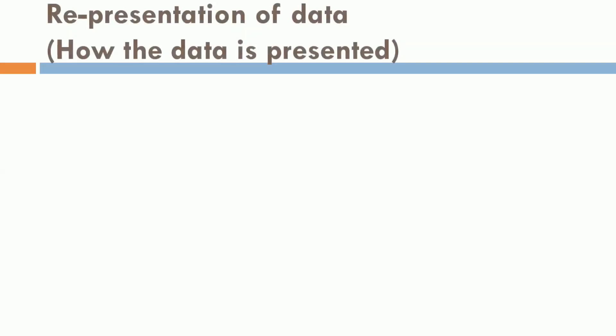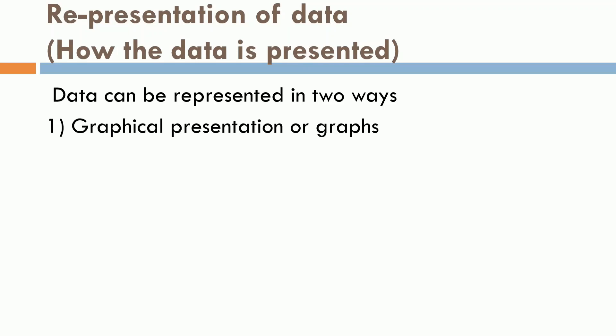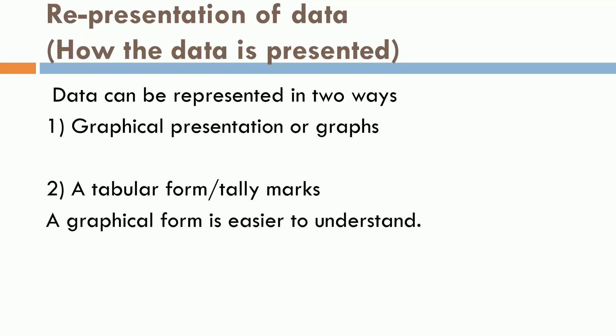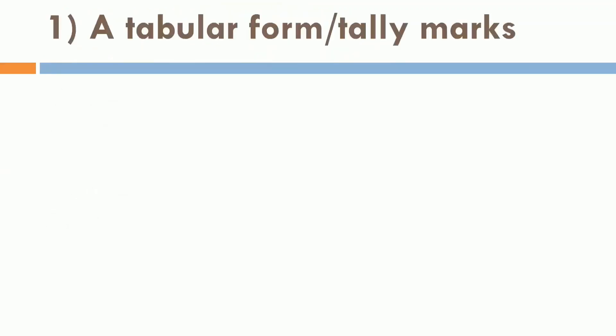After collection of data, it is necessary to represent the data in a precise manner in order to understand easily. And because of that, we can interpret some results. So, let's see representation of data. How the data is presented? Data can be represented in two ways. First, is graphical presentation or graphs. Second, a tabular form or tally marks. However, graphical presentation of data is easier to understand.